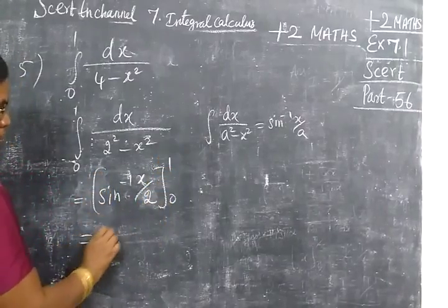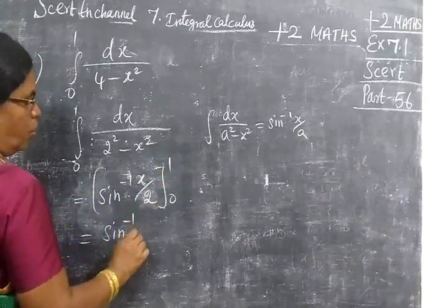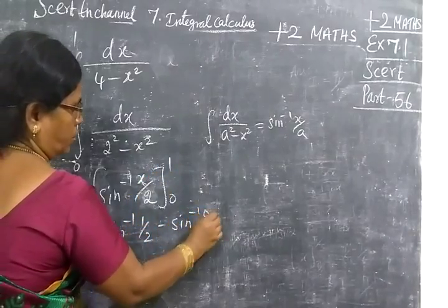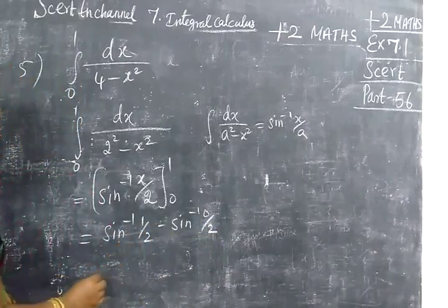So now the upper limit minus lower limit. Here sin inverse 1 by 2 minus sin inverse 0 by 2. Sin inverse 0 is 0.